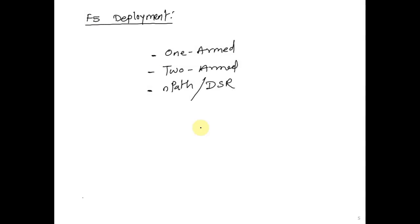Hi friends, my name is Sushmil and today we are going to see F5 deployments. In the last session we had discussed about F5 fundamentals, how it all works. Today we are going to see a few deployment scenarios that include one ARM deployment, two ARM deployment, and NPath — also called DSR, Direct Server Return. Three major types of deployments, so let's get going.